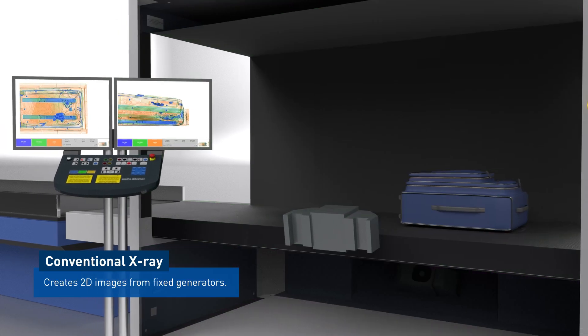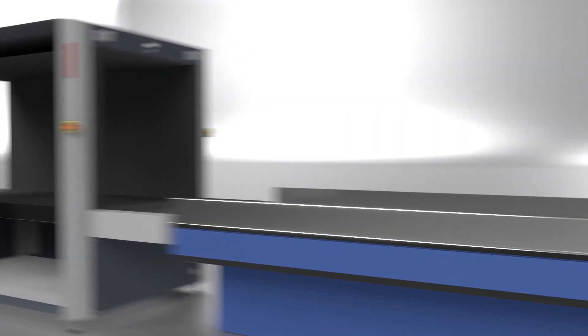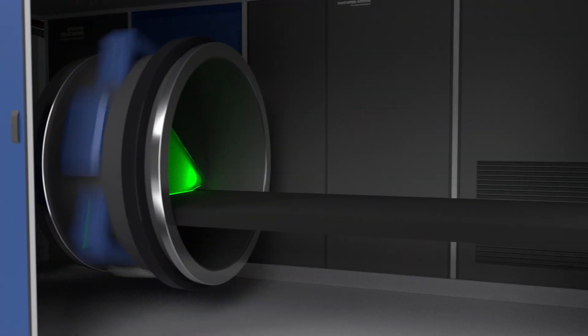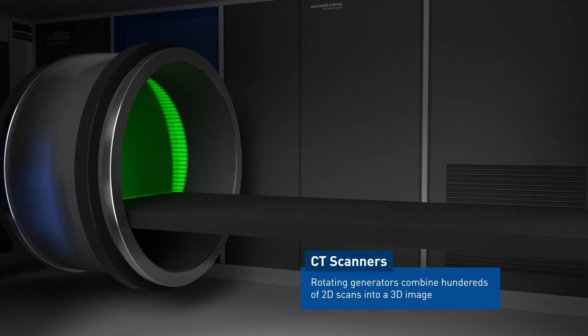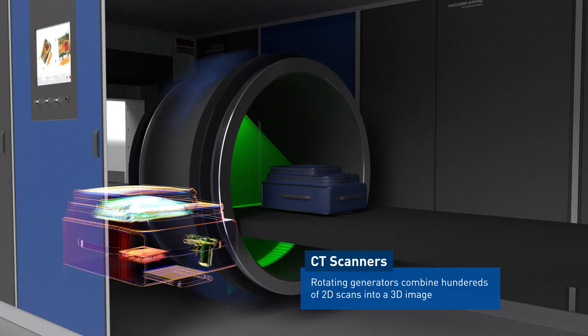Conventional X-ray scanners create 2D images from fixed generators and detectors. CT scanners rotate the generator and detector around the item and reconstruct hundreds of views into 3D images.